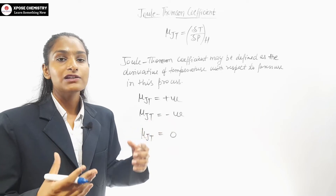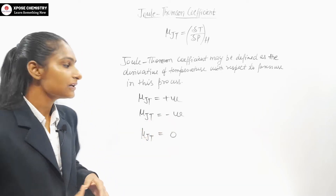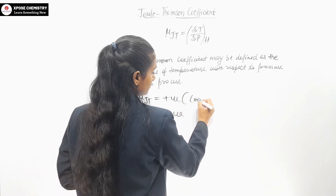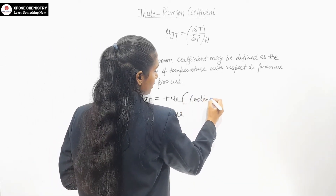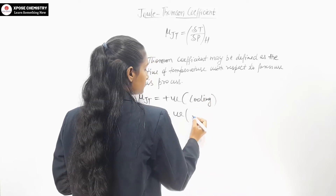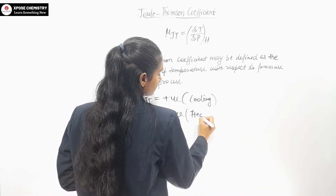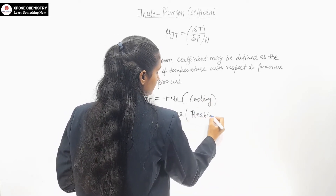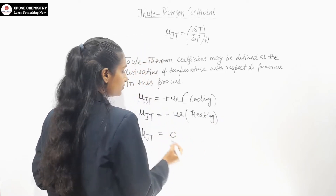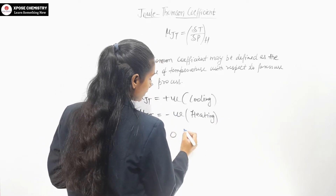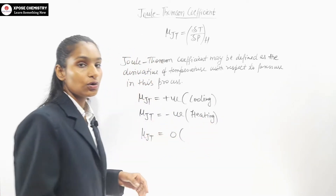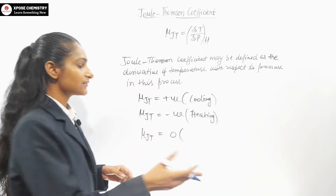When our positive value comes, there is cooling. If there is cooling, μJT will be positive. If there is heating, μJT will be negative.